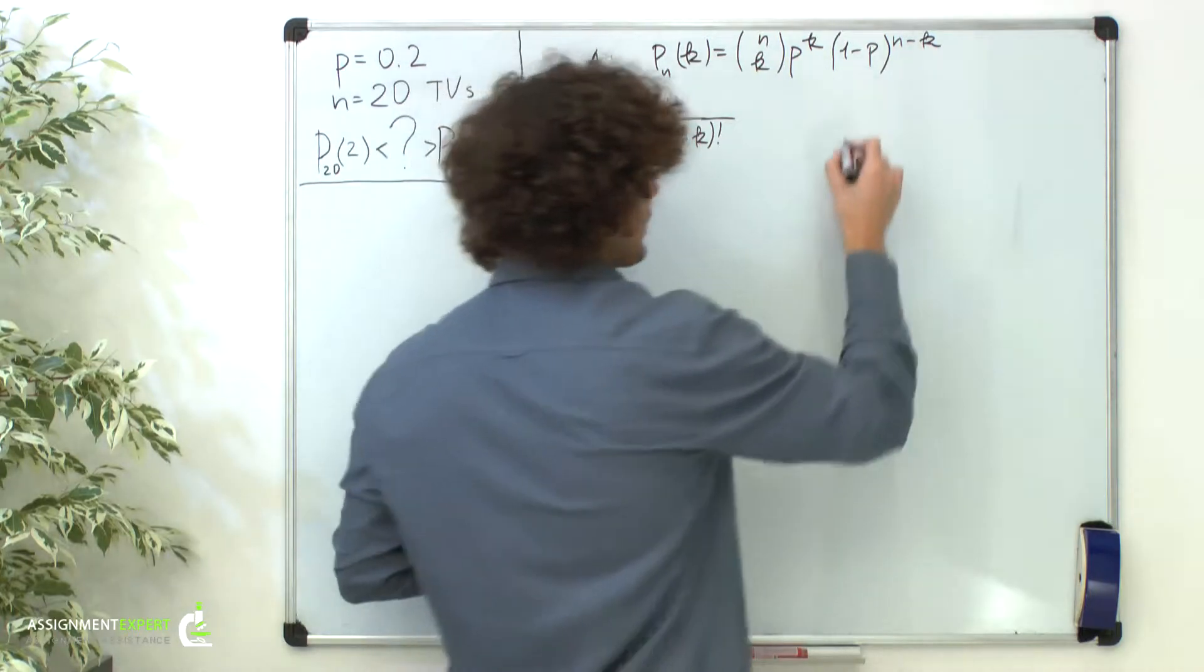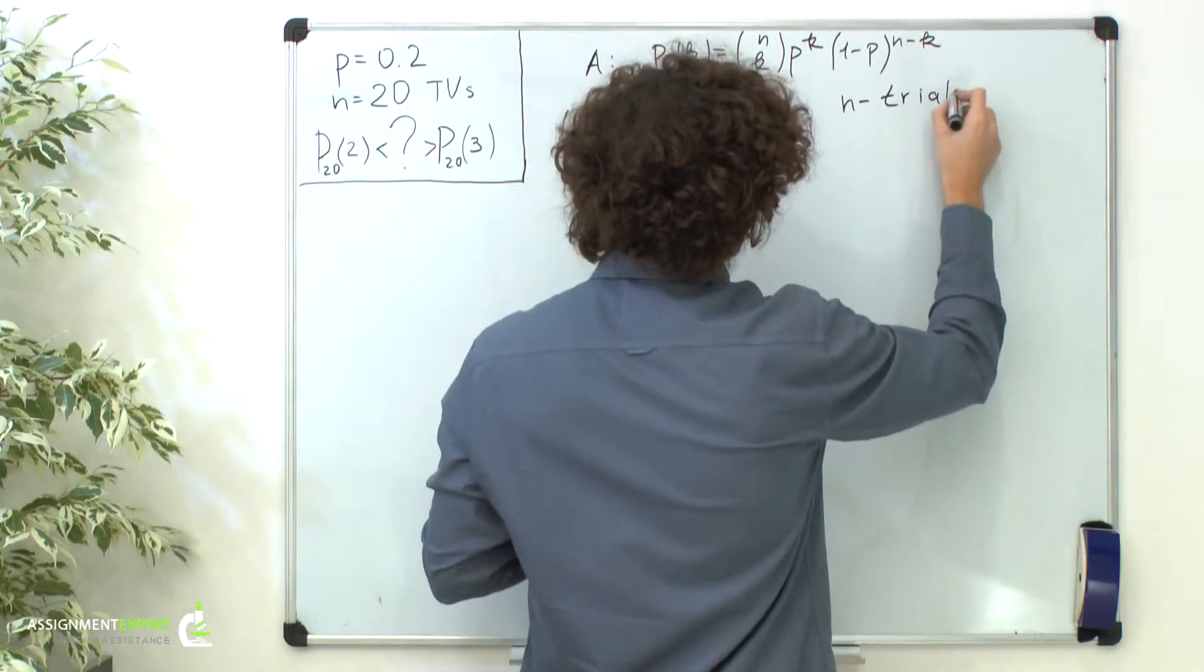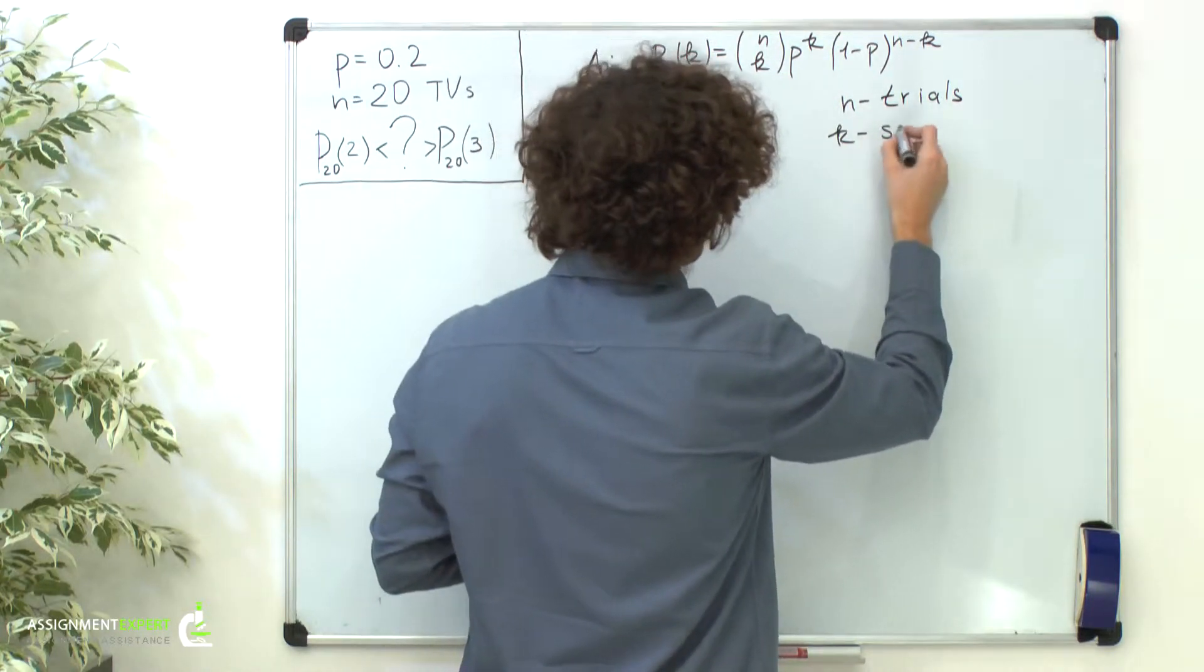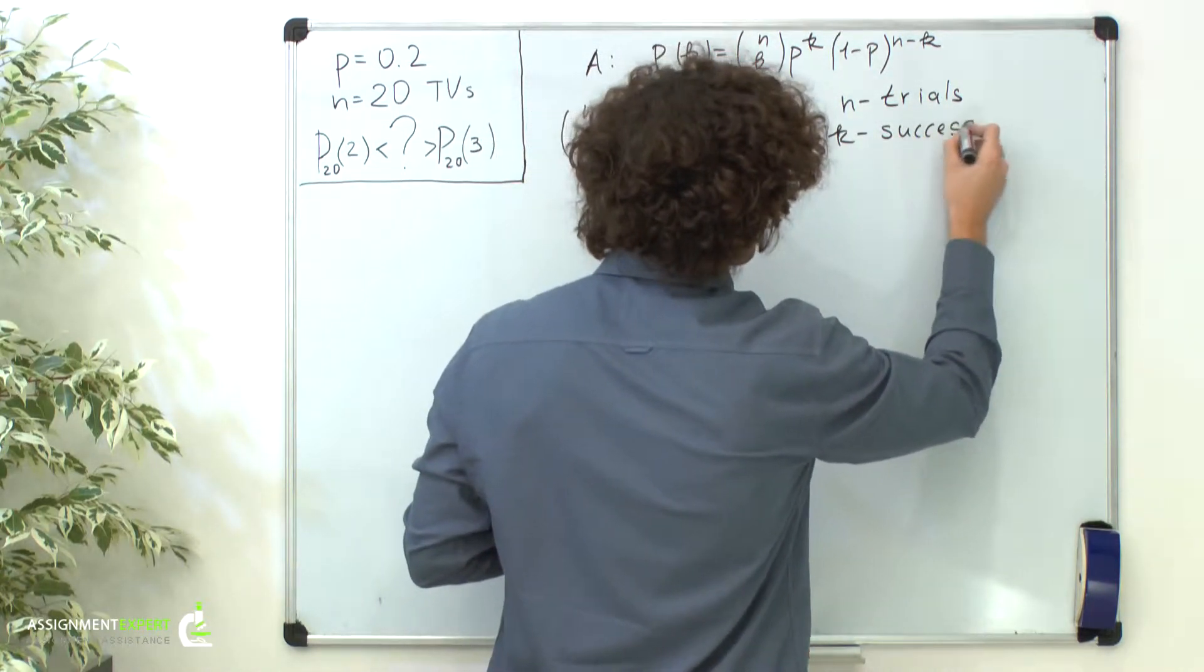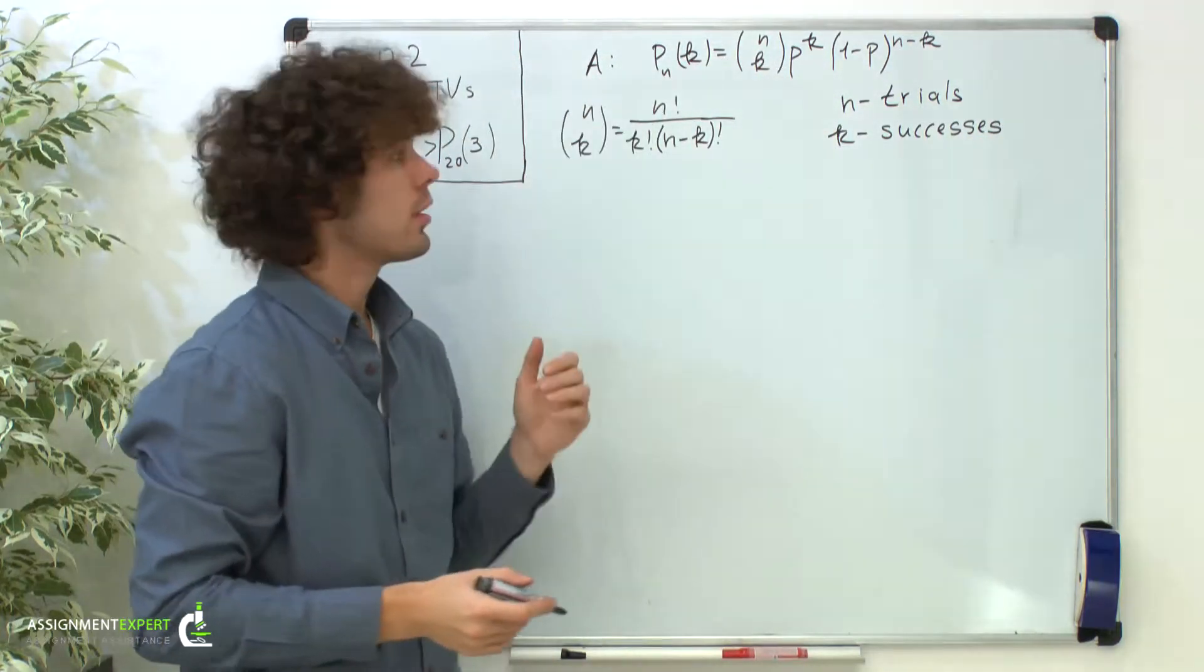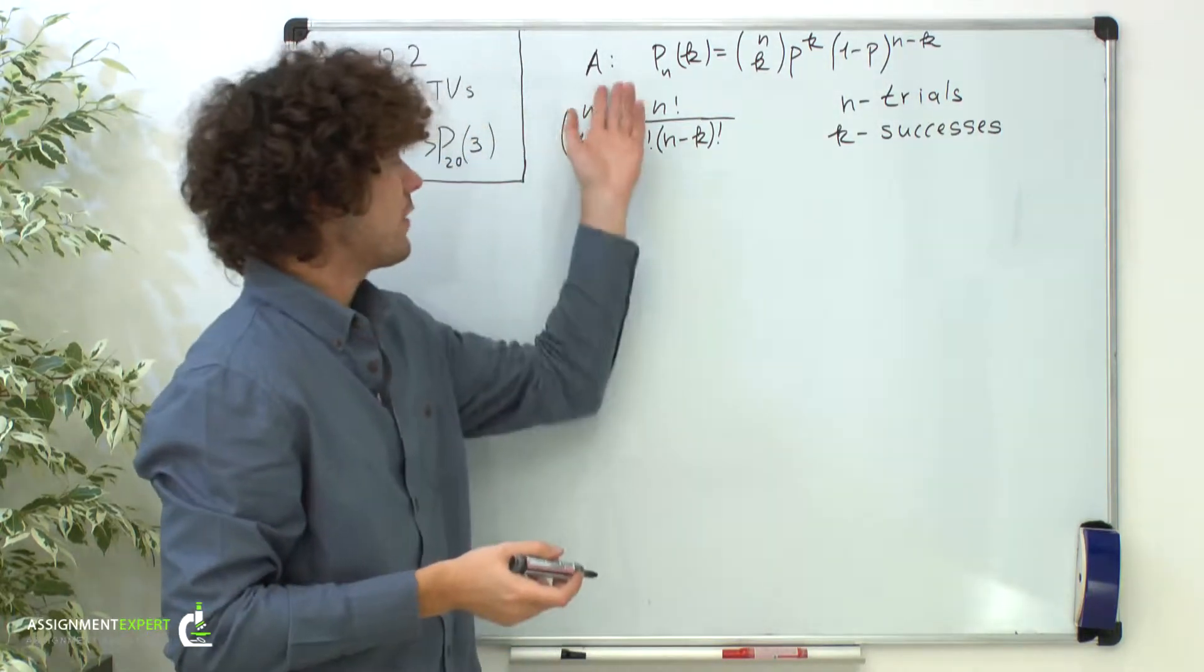n is the number of independent tests or trials. k stands for the number of successes. Success is when event A occurs. Then n minus k is the number of failures when this event will not occur.